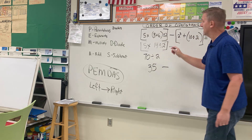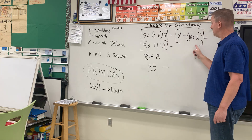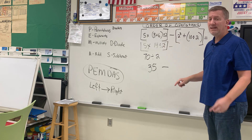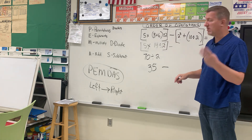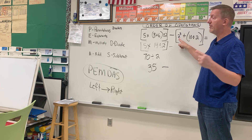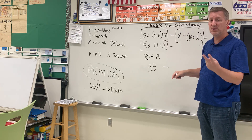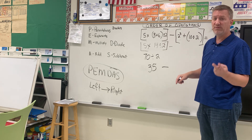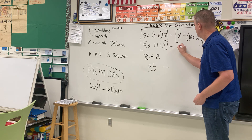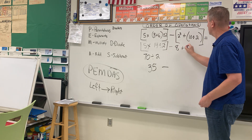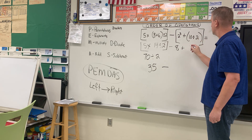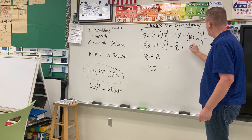Now I can jump over to this side and do these brackets. 2 to the 3rd power — 2 times 2 times 2: 2 times 2 is 4, times another 2 is 8. So that is 8. I put my plus sign because I'm not adding yet — I'm doing the parentheses next. 10 divided by 2 is 5.